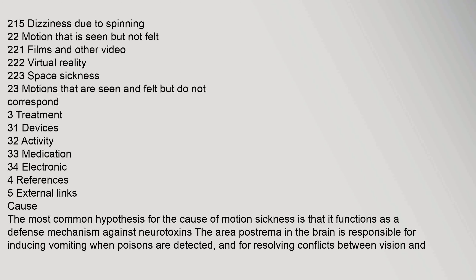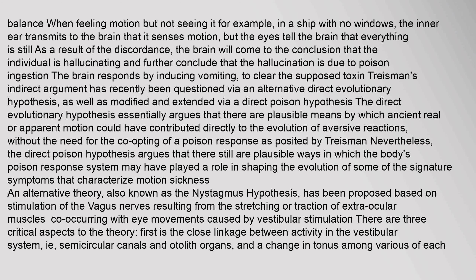The most common hypothesis for the cause of motion sickness is that it functions as a defense mechanism against neurotoxins. The area postrema in the brain is responsible for inducing vomiting when poisons are detected, and for resolving conflicts between vision and balance when feeling motion but not seeing it. For example, in a ship with no windows, the inner ear transmits to the brain that it senses motion, but the eyes tell the brain that everything is still. As a result of this discordance, the brain concludes that the individual is hallucinating, and further concludes that the hallucination is due to poison ingestion, responding by inducing vomiting to clear the supposed toxin.